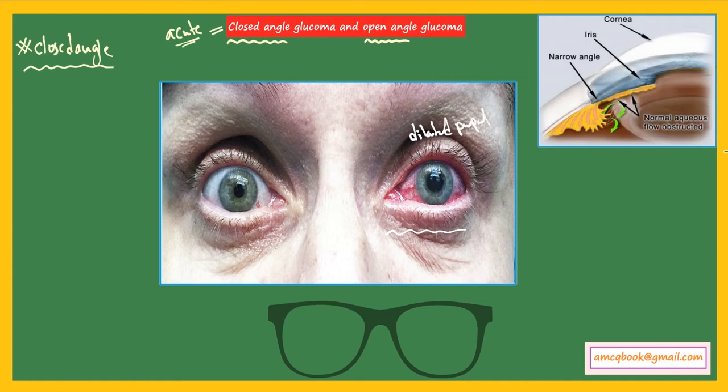The pupil of the patient's left eye is dilated, and the eye is red in color with pain. This is acute glaucoma or closed angle glaucoma.